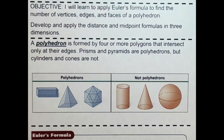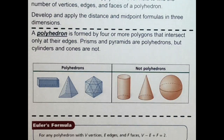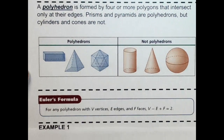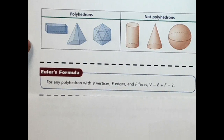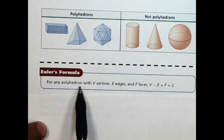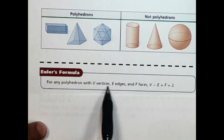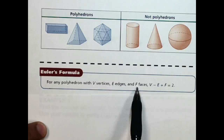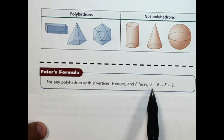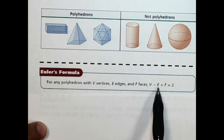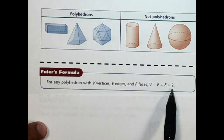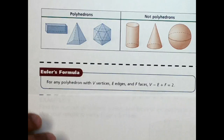All right, and now let's go with Euler's formula. It says for any polyhedron with V vertices, E edges, and F faces, we come up with this formula: V minus E plus F equals 2.